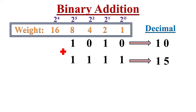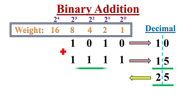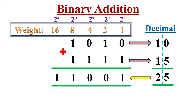In the decimal number system, to add numbers we use the column method. We always add the least digit on the right first and continue adding the digits towards the highest digit on the left. Similarly, to add two binary numbers, we must follow the same column method from the last digit on the right to the highest digit on the left.